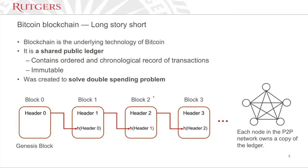So essentially a blockchain is a shared public ledger. Think of any ledger you've learned from your accounting class — a general ledger contains all the transactions. The blockchain is a similar type of ledger, but it records transactions in an orderly, chronological way. All the transactions are timestamped by the time the transaction happened — that's one feature of this ledger.